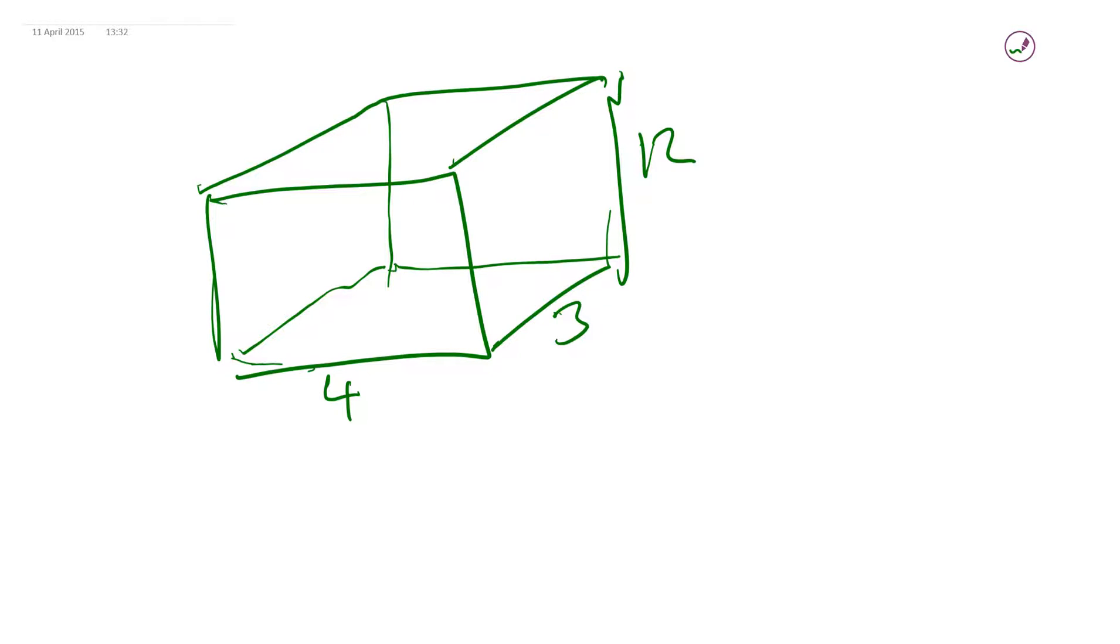This is a cuboid. And what's special about 3D trigonometry is that you've got one or two extra words, like plane. A, B, C, D. And let's call that an E.